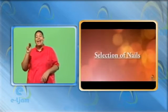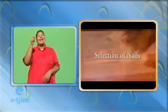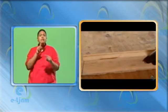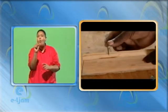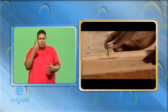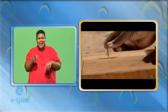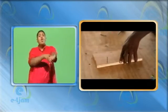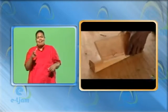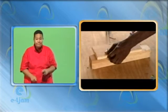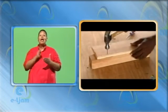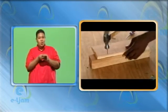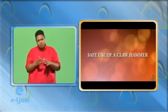Selection of nails: selection of a type of nail depends upon application. Selecting the length of a nail depends upon practical consideration — the length of a nail is usually three times longer than the thickness of the material to be fastened, but less than the total thickness of the two pieces to be fastened.